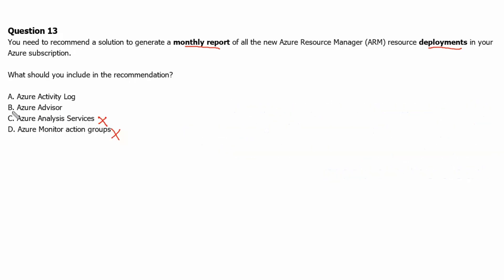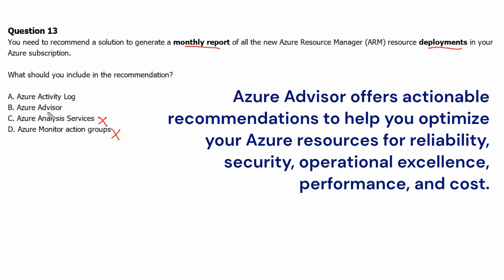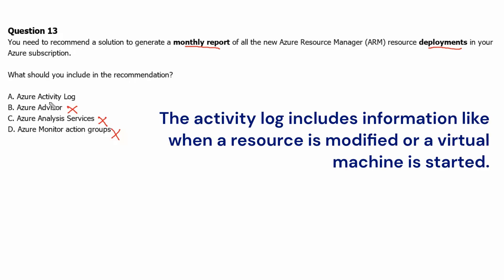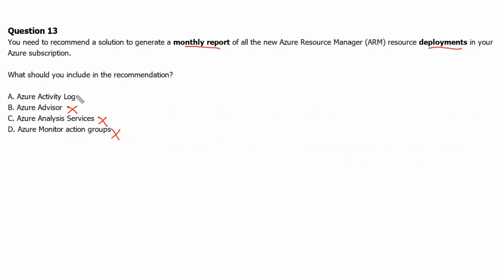Option B: Azure Advisor — Advisor is a digital cloud assistant that helps you follow best practices to optimize your Azure deployments. It doesn't help produce a monthly report for deployments, so this is also incorrect. Option A: Azure Activity Log — activity logs are kept for 90 days and you can query for any range of dates as long as the starting date isn't more than 90 days in the past. Through activity logs we can determine what operations were taken on resources in the subscription, who started the operation, when the operation occurred, the status of the operation, and the values of other properties. Therefore, we can produce a monthly report of new Azure Resource Manager resource deployments using Azure Activity Log — this is the correct answer.